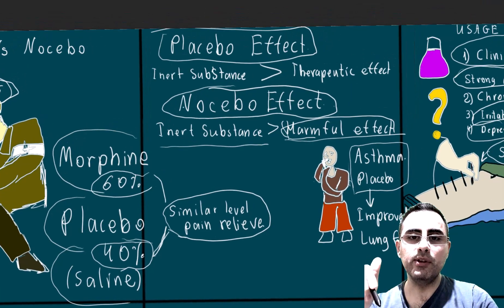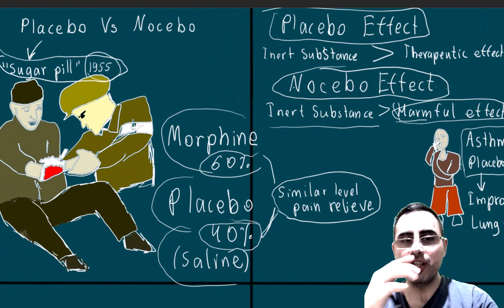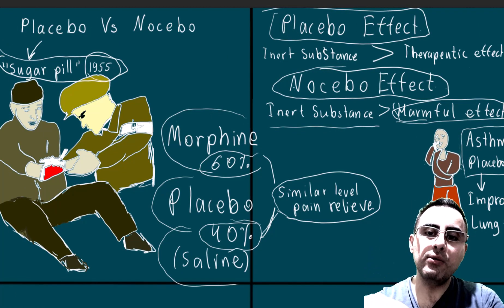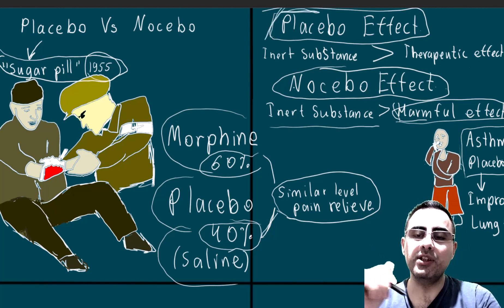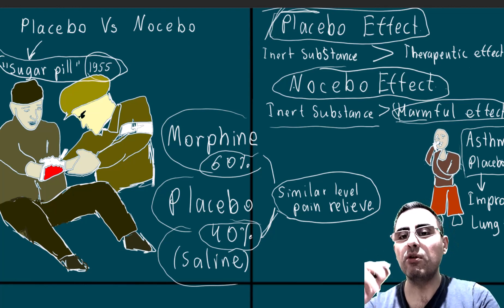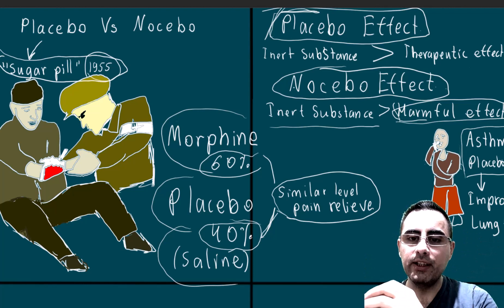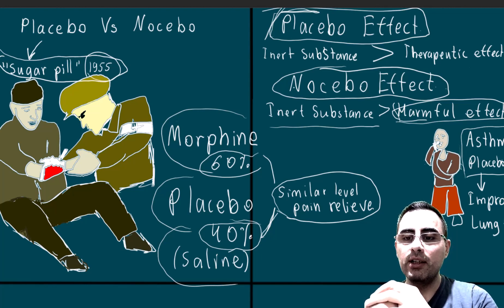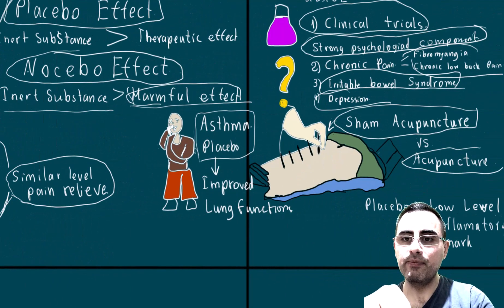That's all I wanted to say about placebo and nocebo. One important point is about expectations: if you have a positive attitude and positive expectations, positive outcomes are more likely to happen at the level of your brain. If you have negative expectations, negative outcomes are also more likely to happen. So be positive. Thank you very much, bye for now.